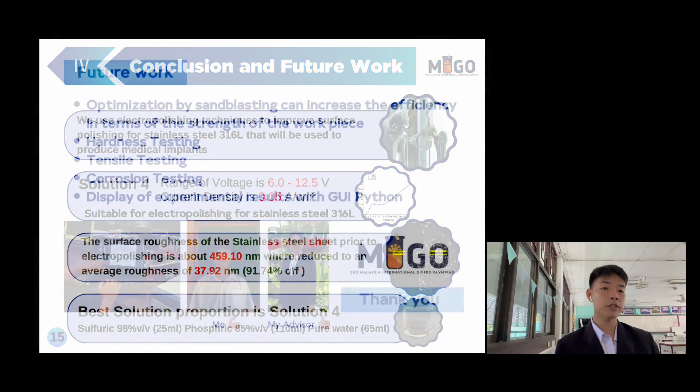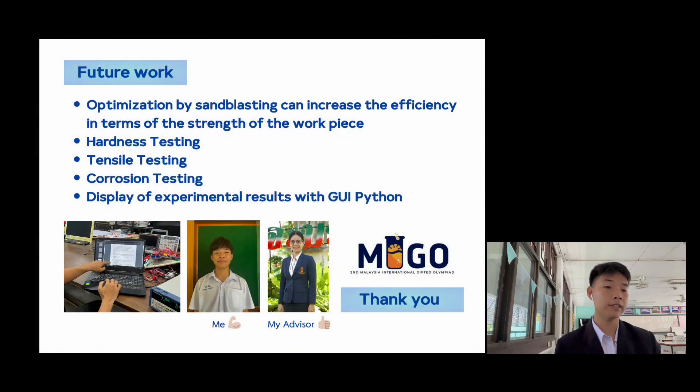This is future work: optimization by sandblasting can increase the efficacy in terms of the strength of the workpiece. We will do hardness testing, tensile testing, corrosion testing, and display of experimental results with GUI Python.